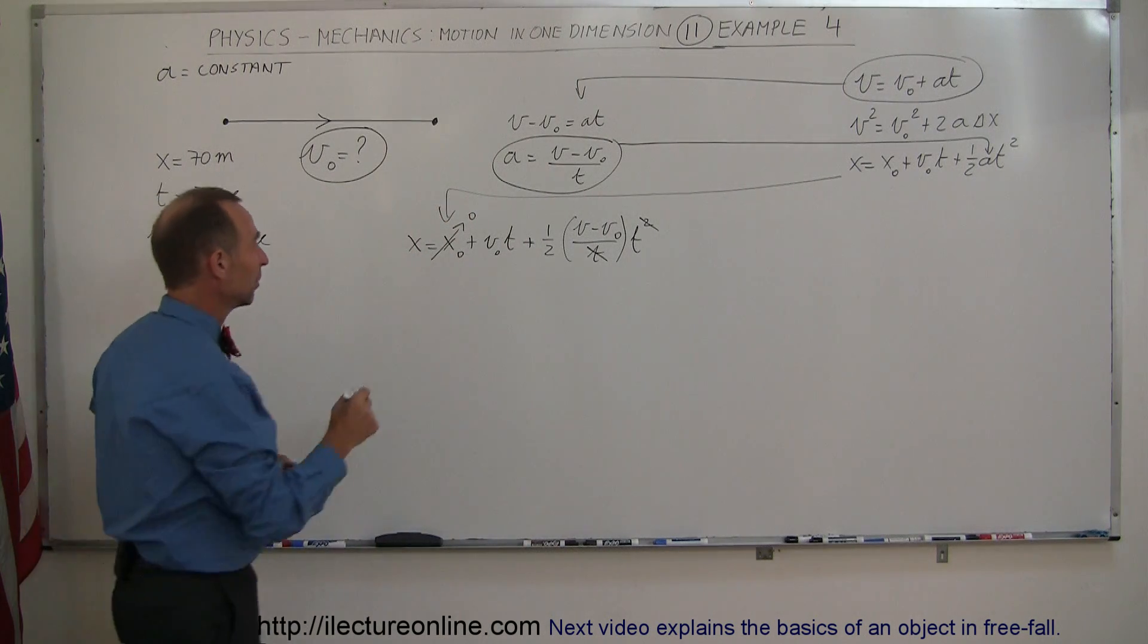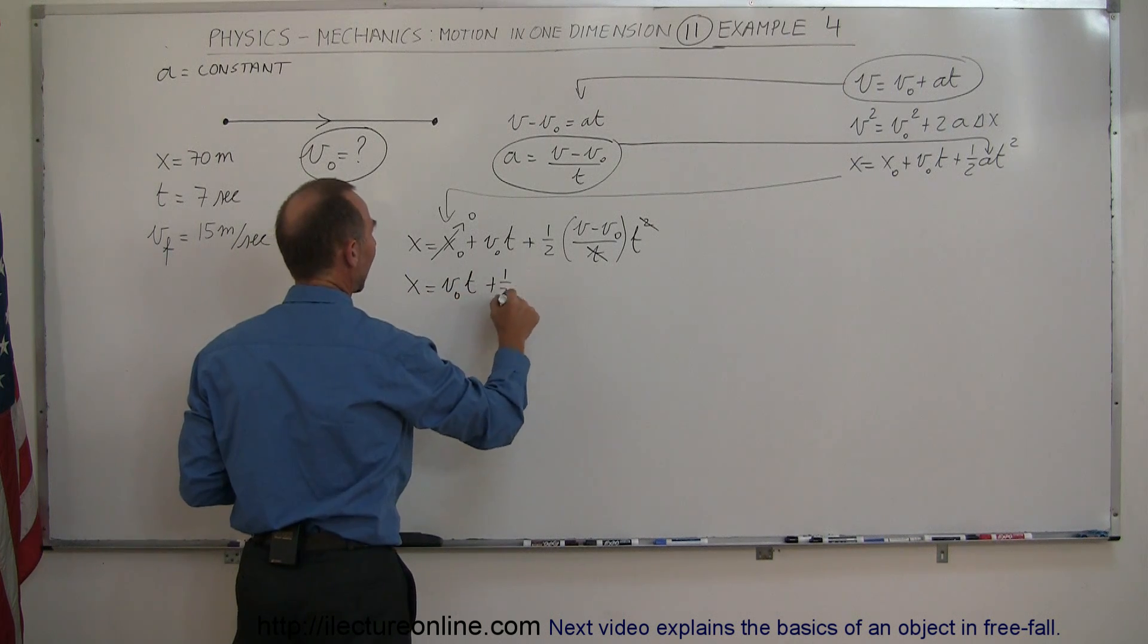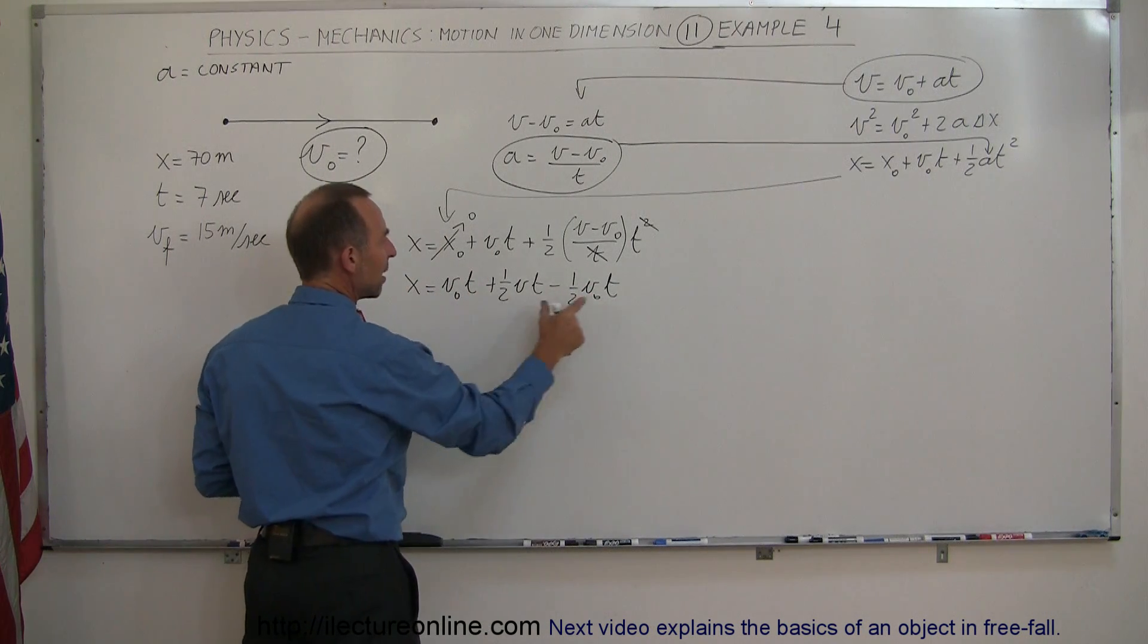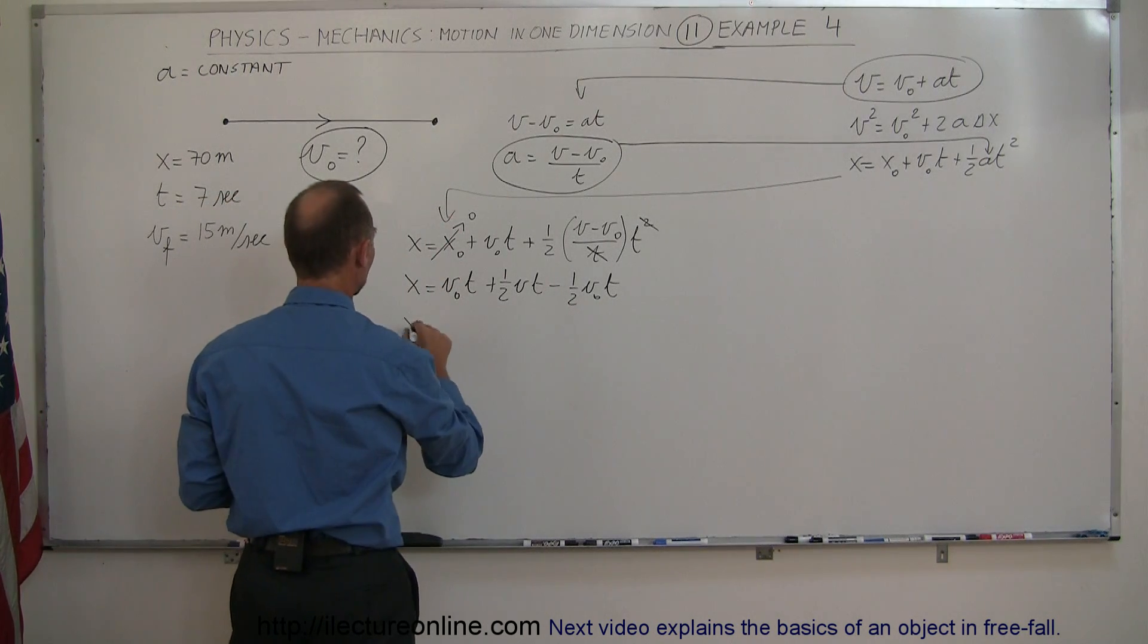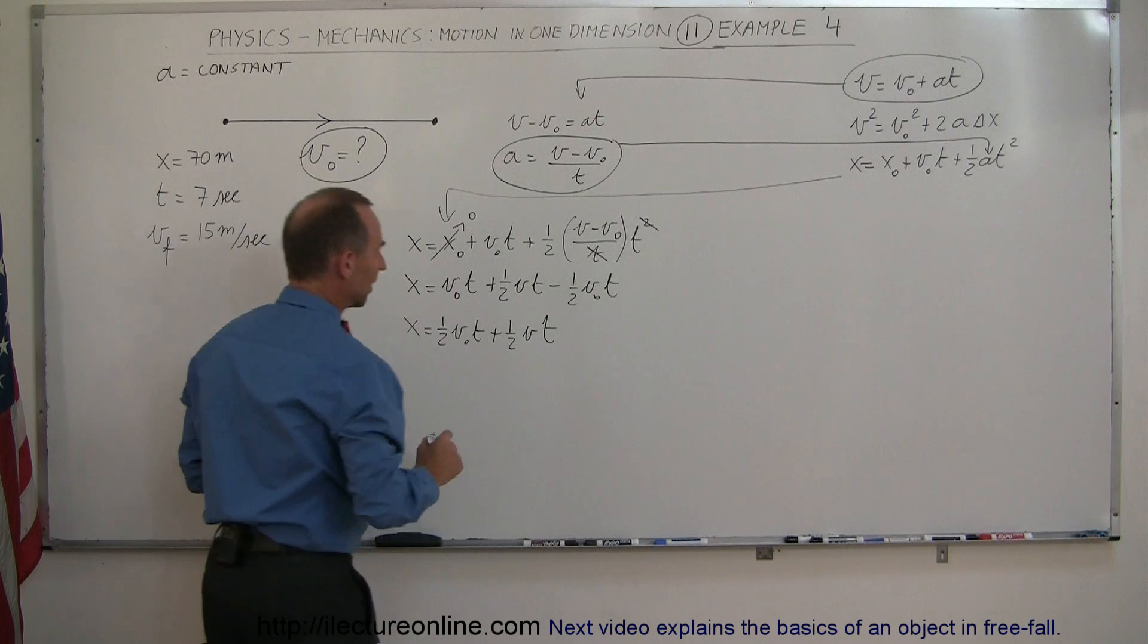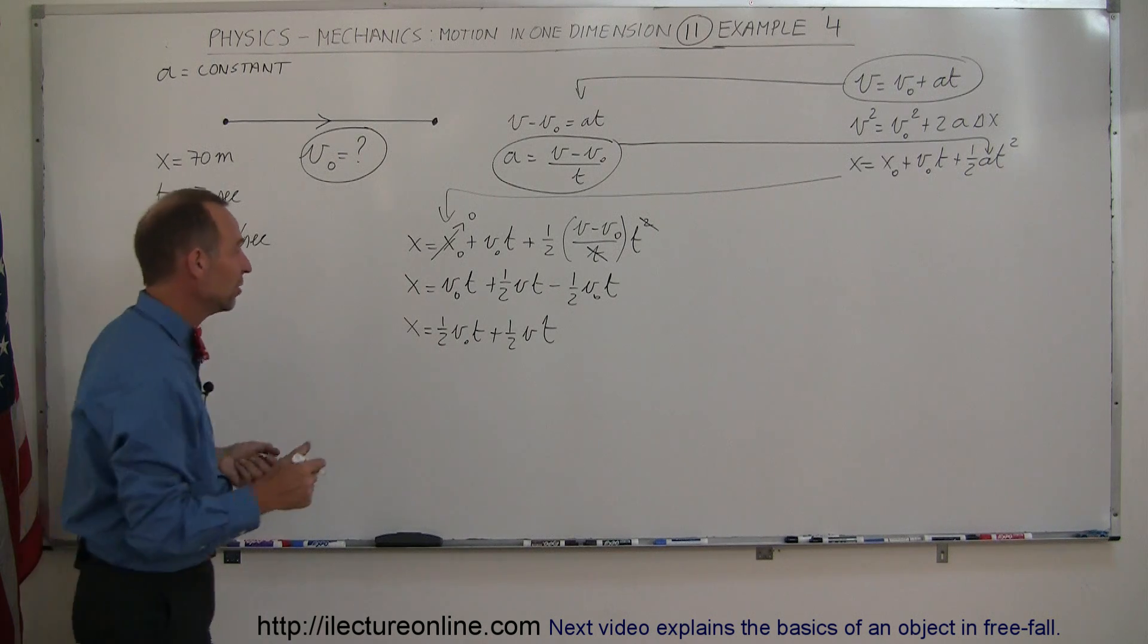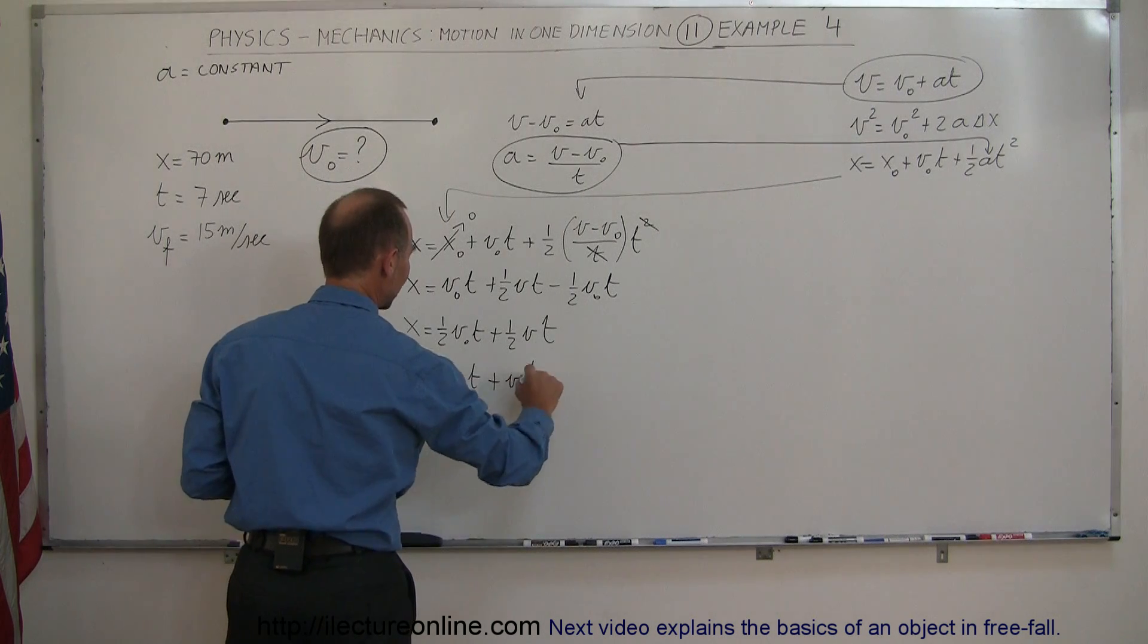So now, working that out a little bit more, we have X equals V sub naught times T plus one-half V times T minus one-half V sub naught times T. Now notice that I have V sub naught T minus a half of V sub naught T, which gives me a half of V sub naught T. So X equals one-half V sub naught T plus one-half V T. Notice I can then factor out a one-half times T, or actually I can multiply both sides by two. That makes it even easier. So that gives me 2X equals V sub naught T plus V times T.